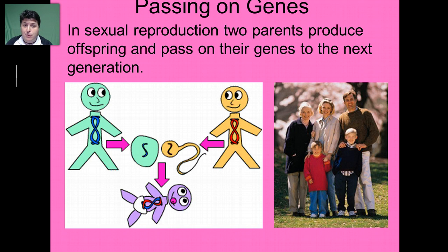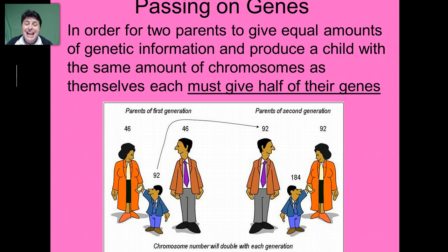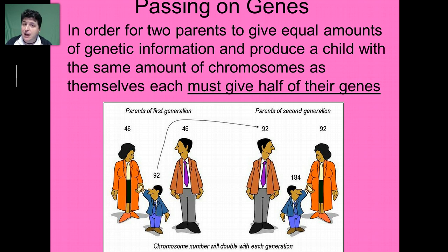In sexually reproducing organisms, two parents produce offspring and pass on their genes to the next generation. In order for two parents to give equal amounts of genetic information and produce a child with the same number of chromosomes as themselves, each must give half of their genes.